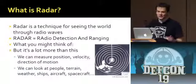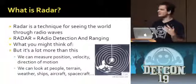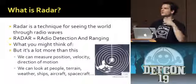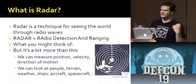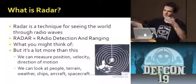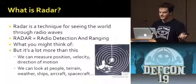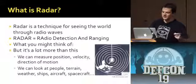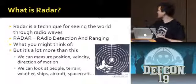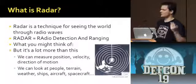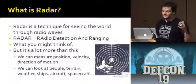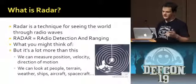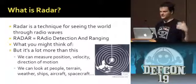So first of all, what is radar? Basically it's some way of looking at the world through radio waves. You're measuring something, sensing some sort of electromagnetic field, and generally what you're doing is you send out a pulse and you look at the response. Radar used to be an acronym — it's become a word — it stands for Radio Detection And Ranging, and that's basically what it is. What you might think of traditionally is something like a weather radar from the 1940s. What you're measuring is essentially the position, velocity, and direction of motion of something.